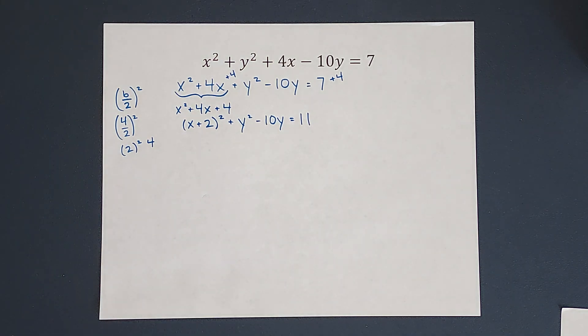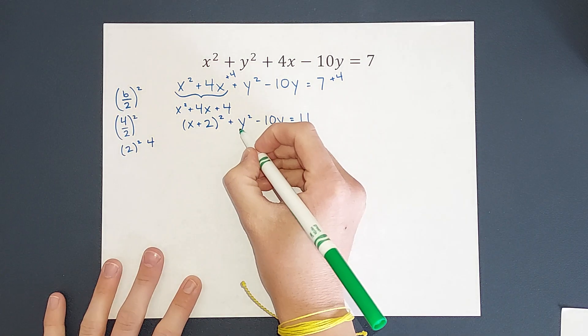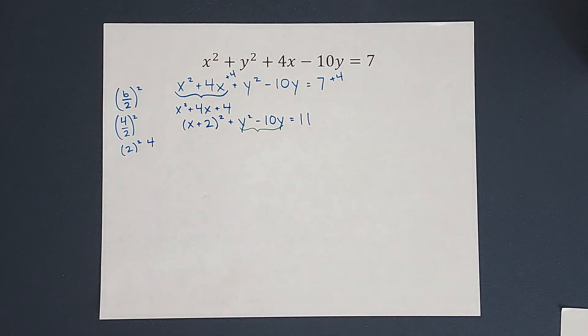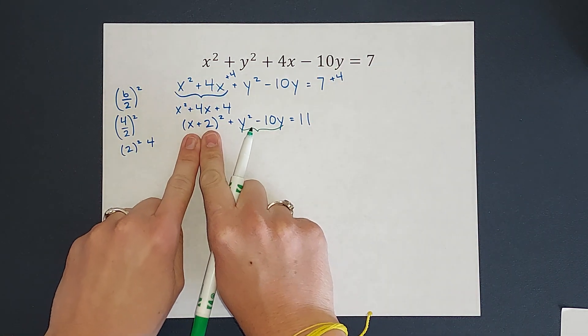All right, now we're going to complete the square with the y's. As you do this more and more, you may be able to do them at the same time. Just for the sake of this example, I wanted to do them separately. So I'm changing colors. Because now we are focusing on the y's. I want this to be y plus or minus something squared just like this one is.